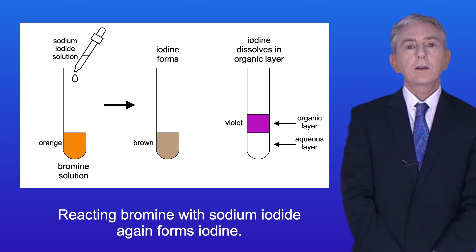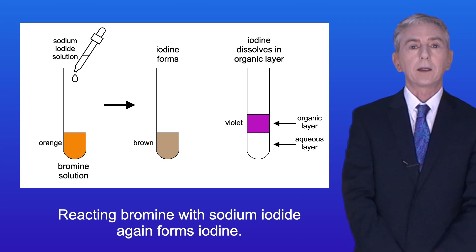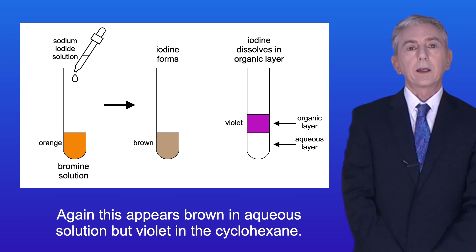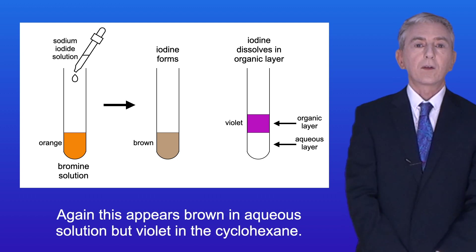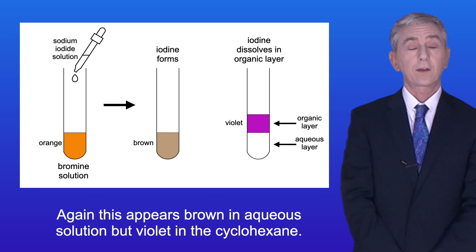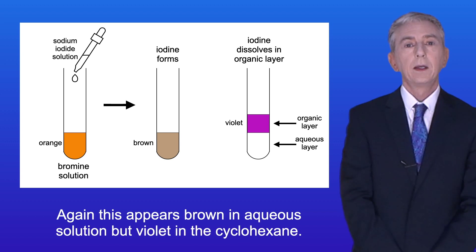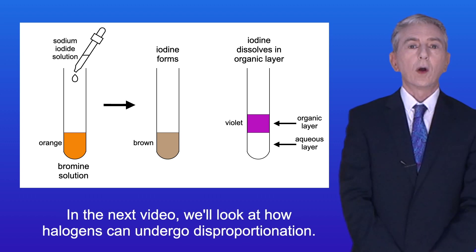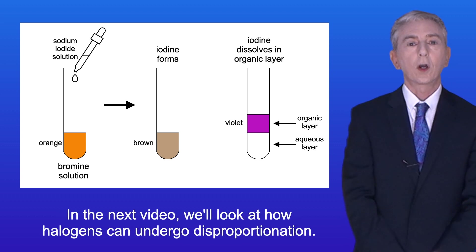Reacting bromine with sodium iodide again forms iodine, and again this appears brown in aqueous solution but violet in the cyclohexane layer. In the next video we look at how halogens can undergo disproportionation.